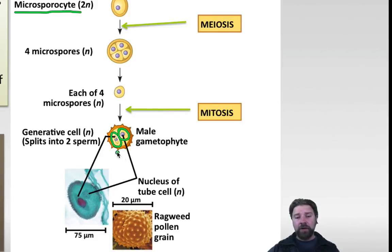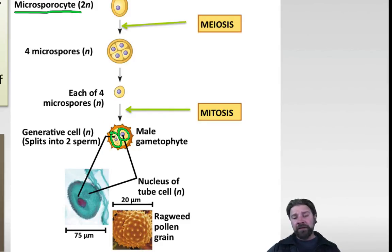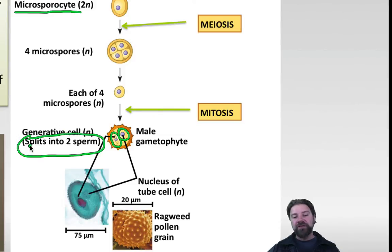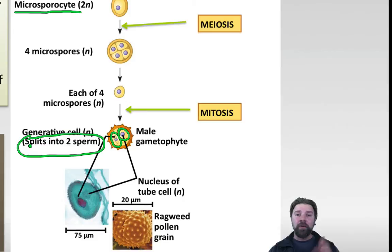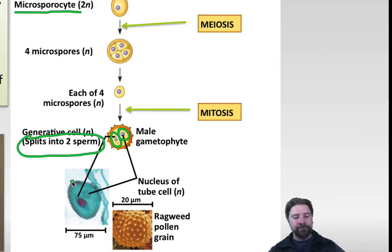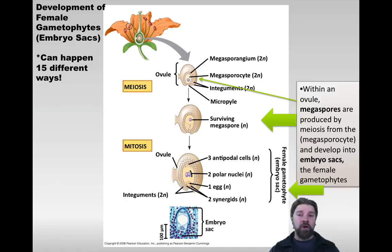The pollen grain is made of a generative cell and the nucleus of a tube cell, and it has a spiky pollen coat on the outside - the spikes allow it to stick to the stigma and to the animal that transfers it. The generative cell, when it lands on the stigma, is actually going to split into two sperm. So when it reaches the female flower, you essentially have a three-celled pollen grain that will allow growth downward into the female part. The pollen grain then consists of the two-celled male gametophyte and the spore wall around the outside.